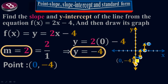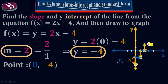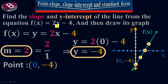Rise is 2 and run is 1 — that gives my second point. For the third point, go up 2 and run 1 again. For the fourth point, again rise 2 and run 1. I now have 4 points in the xy-plane. Joining all four points gives me the graph of the line f of x equals 2x minus 4.